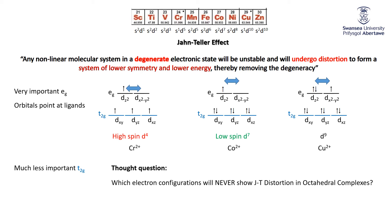Here's a thought question: which electron configurations will never ever show Jahn-Teller distortions in octahedral complexes? In other words, which configurations have no degeneracy at all — no choice about which orbitals the electrons occupy? The first obvious one is d3: three electrons go unambiguously into the t2g. Next is high spin d5: one, two, three electrons in the t2g and one in each of the eg orbitals — no degeneracy.